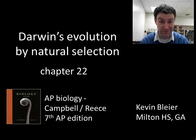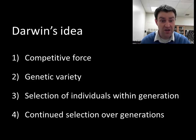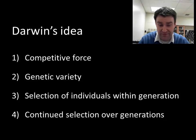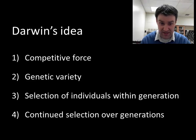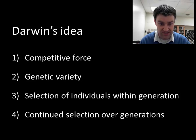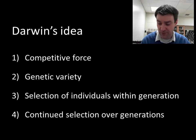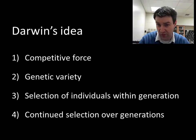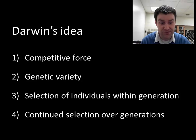But natural selection is still a very important cause of evolution of species. When we break down how Darwin's idea works, I like to break it down into four steps — four steps that I'm going to want to see in any of your explanations. We'll go into detail after I go through an example. There has to be some kind of competitive force, sometimes also called a selective pressure — something that's making it hard to survive for individuals.